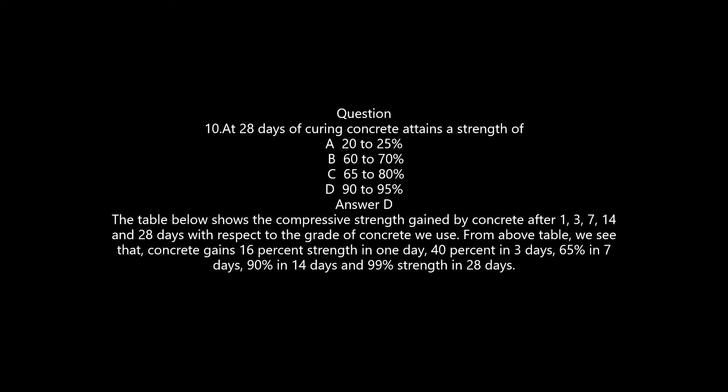At 28 days of curing, concrete attains a strength of: A) 20 to 25 percent, B) 60 to 70 percent, C) 65 to 80 percent, D) 90 to 95 percent. Answer: D. Concrete gains 16% strength in one day, 40% in three days, 65% in seven days, 90% in 14 days, and 99% strength in 28 days.